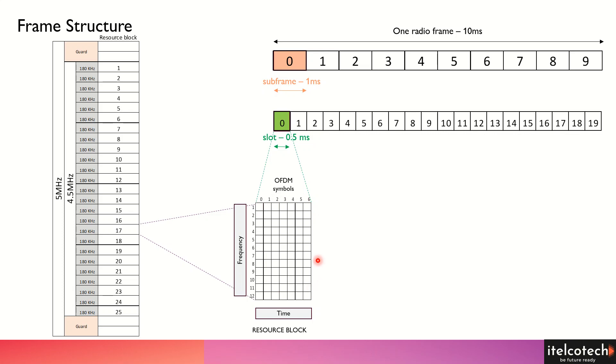The smallest bit of the resource block, or the resource allocation in the physical layer, is defined by the resource element. It is important to allocate these resources efficiently across different channels and signals.